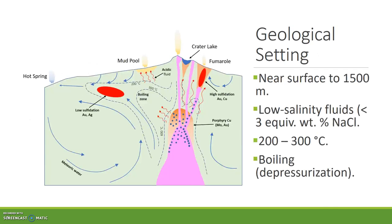Epithermal deposits form in the top 1,500 meters of the crust at temperatures between 200 and 300 degrees Celsius, from low-salinity fluids that contain less than 3 equivalent weight percent NaCl. There are two types of epithermal deposits: low sulfidation systems, which form distal to the magmatic center, and high sulfidation deposits, which are more closely associated with acidic fluids and form closer to the magmatic center, commonly adjacent to porphyry copper deposits.